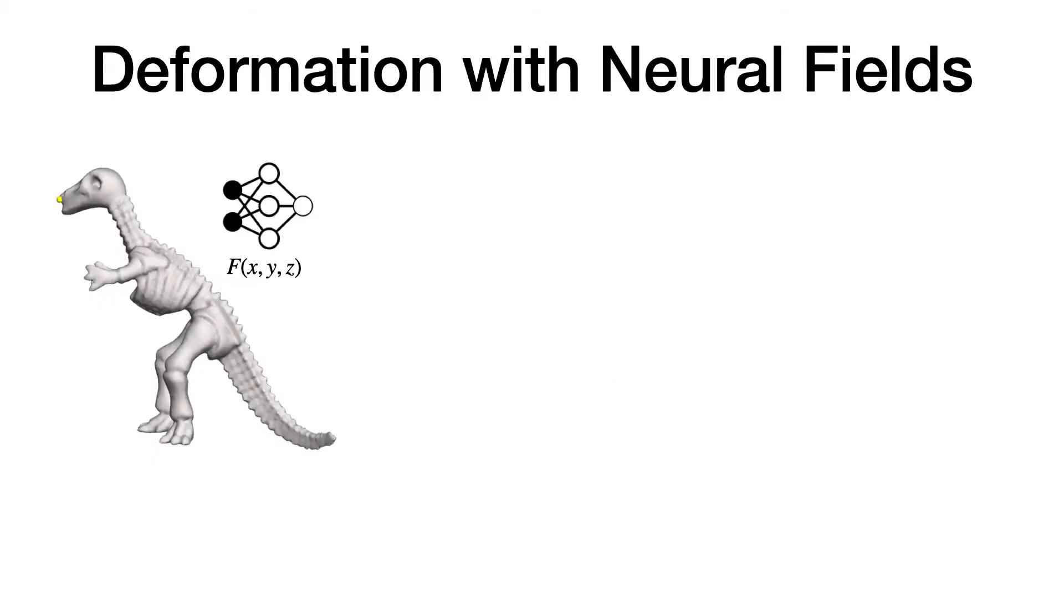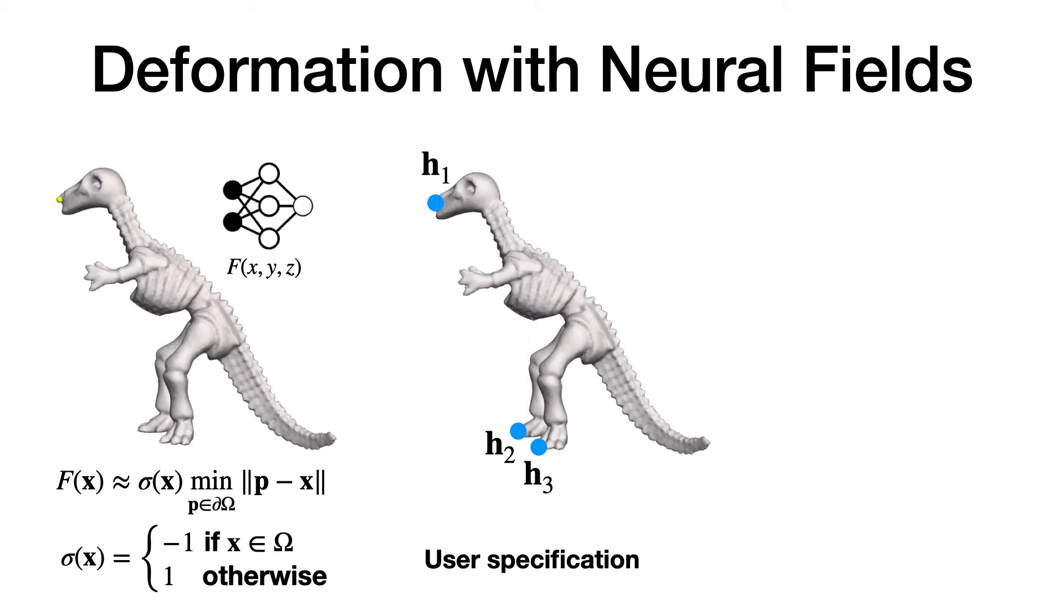In our shape deformation setting, we assume the input shape is represented by the zero-level set of a neural field F. We assume that F approximates the signed distance field of this shape. The user will specify a set of surface points as handles they want to manipulate.